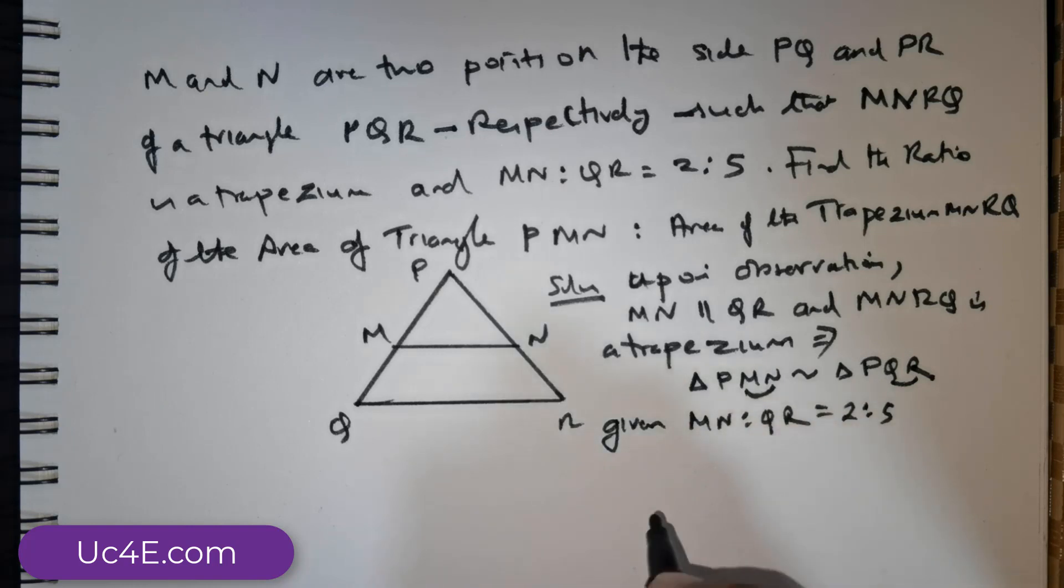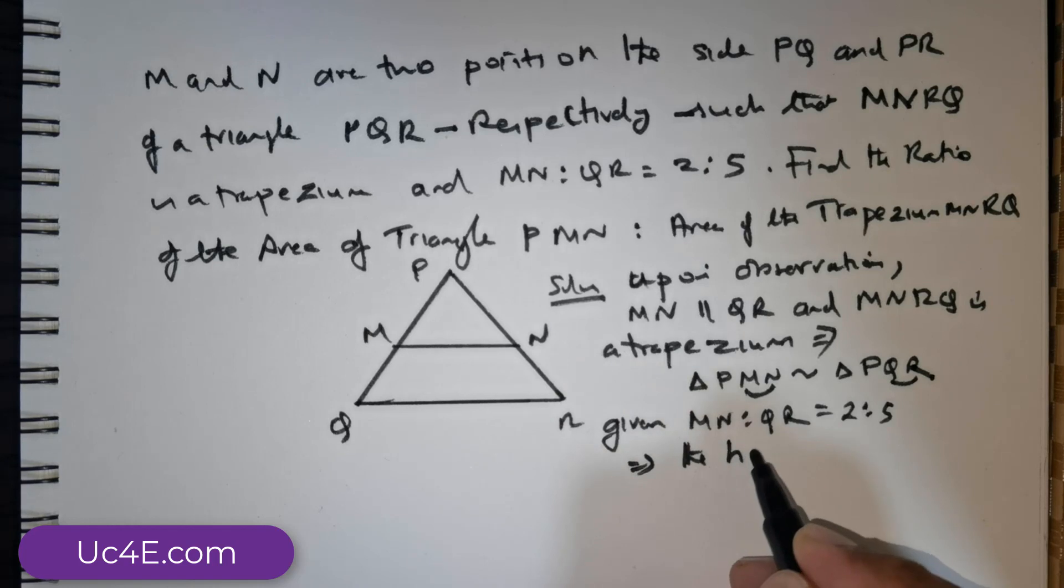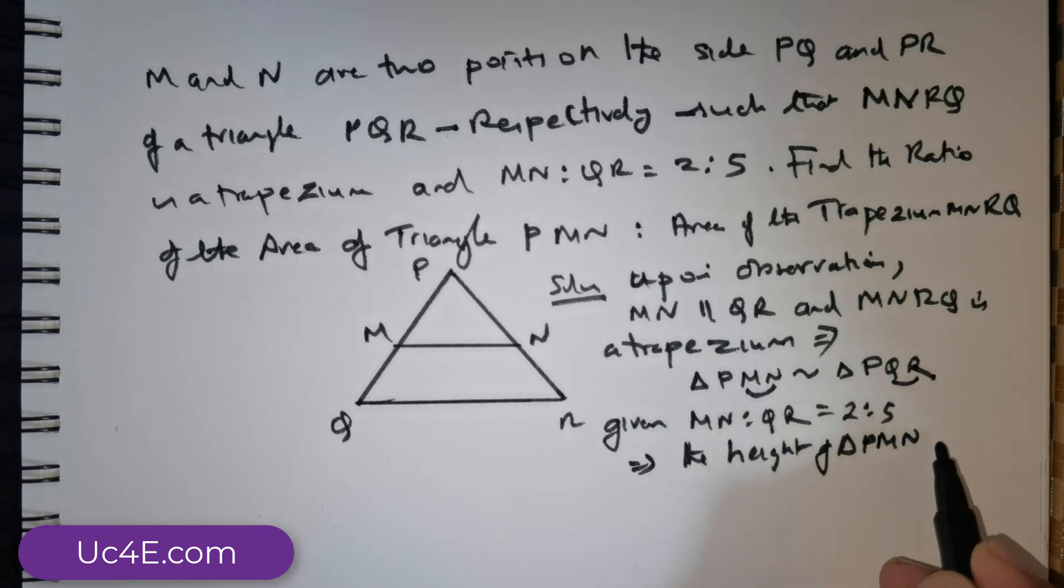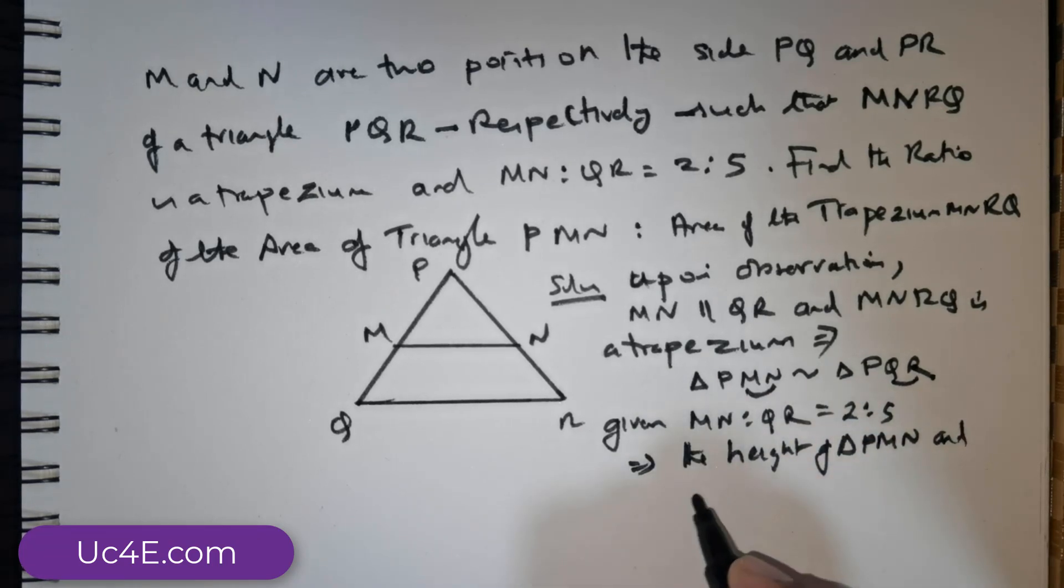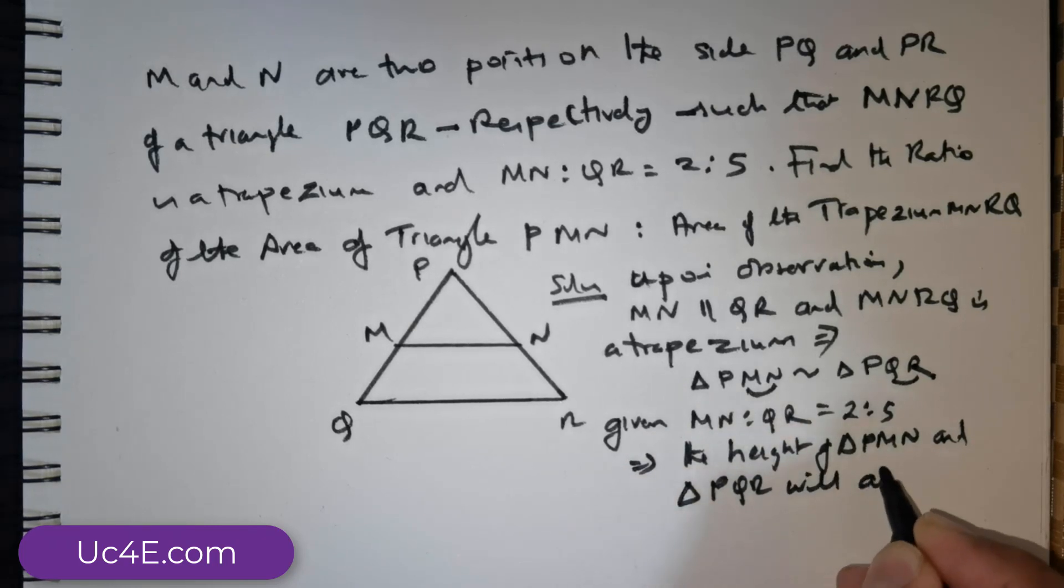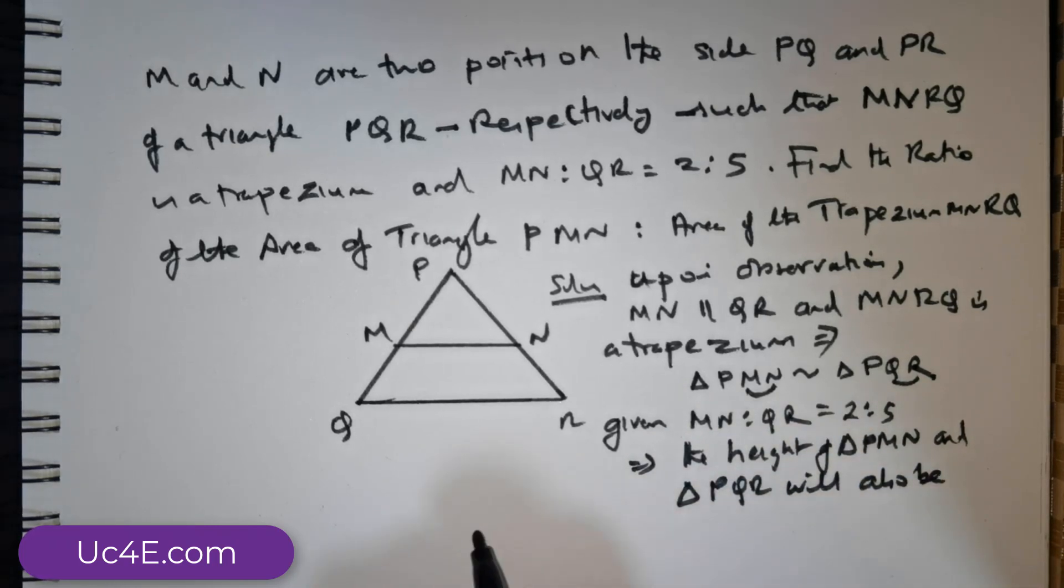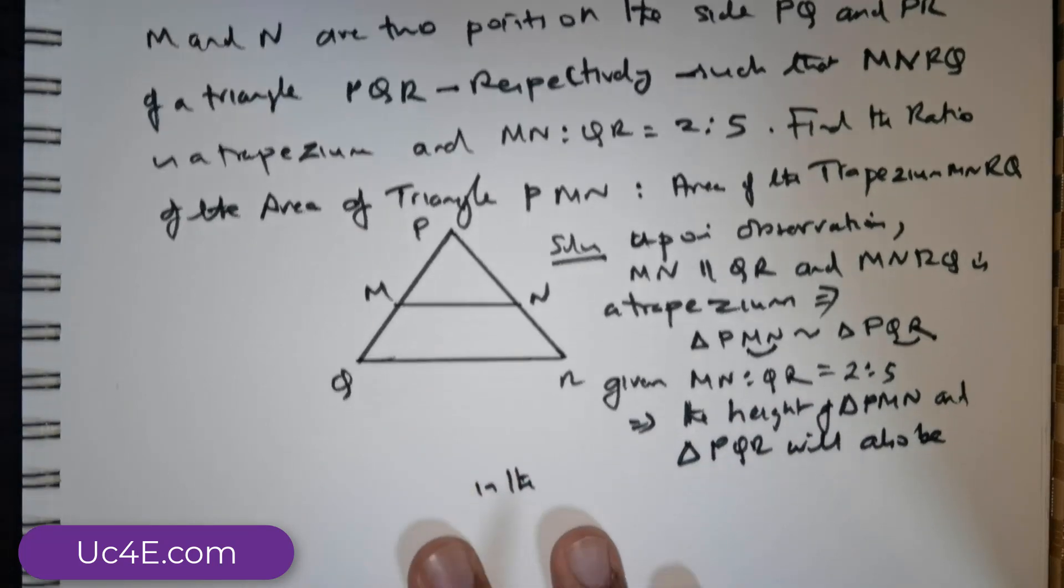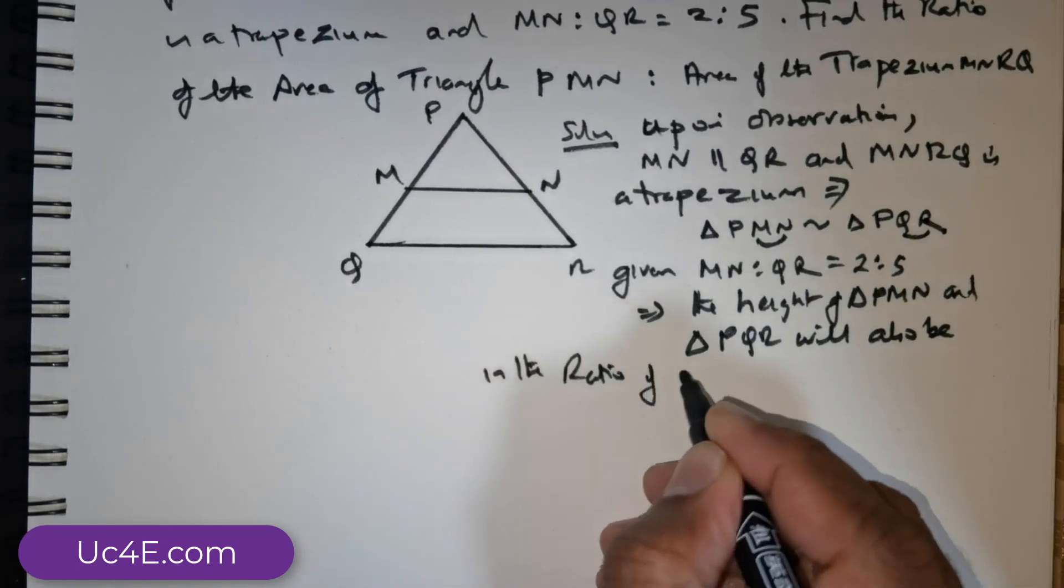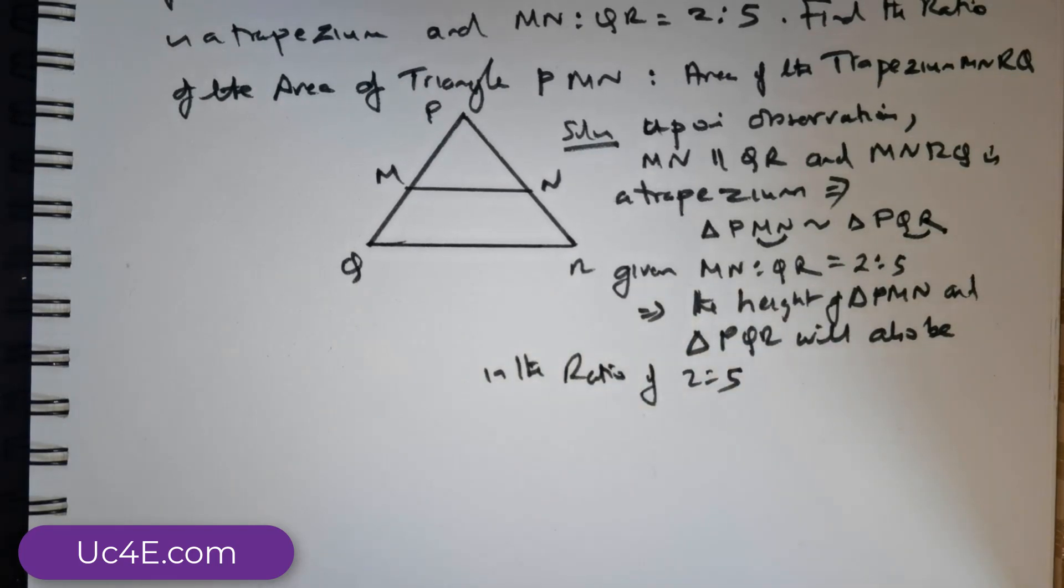So what does that mean? This would mean the heights will also be in the ratio. The heights of triangle PMN and triangle PQR will also be in the ratio of 2 is to 5.